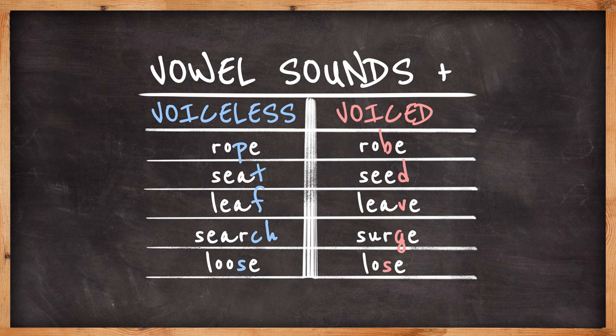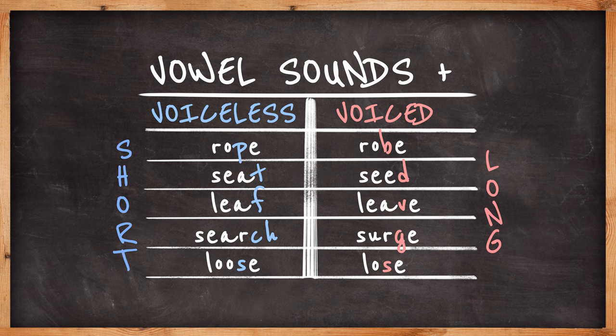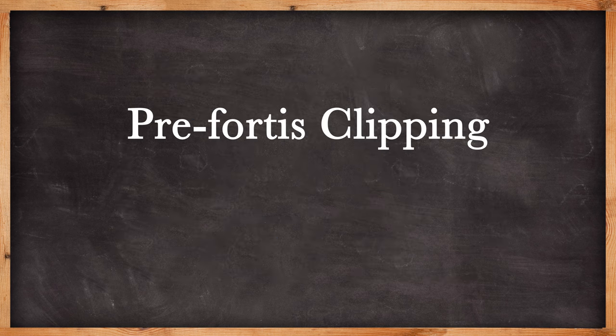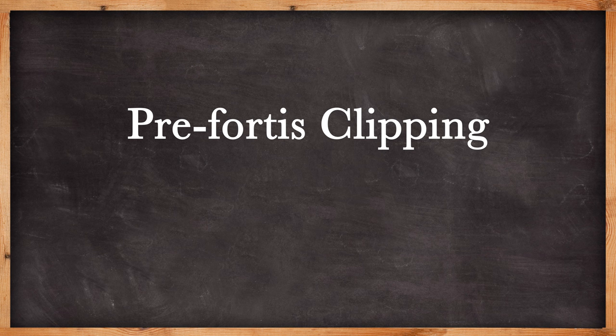In each case, everything about the words is the same except for the voicing of the final consonants, but this causes a significant difference in their pronunciations as the vowel sounds on the left are shortened as a result. This process is called pre-fortis clipping, and it is particularly noticeable in English in long vowel sounds.